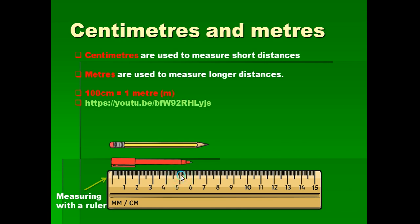Let's check another object — this pencil. Starting from zero, this pencil is 7 centimeters. So if you want to measure, you can use a ruler or a tape rule — a meter rule. You will find a meter rule with people selling building materials or selling clothes. It is used to measure longer distances.